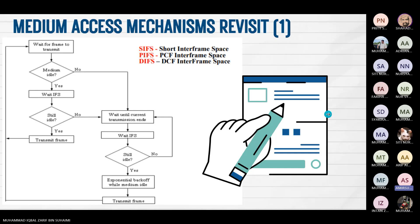For the process of medium access mechanism, as you can see here, it starts with waiting for a frame to transmit, then it checks if the medium is idle. If no, it will wait until the current transmission ends, then wait for IFS and check again if it is still idle.